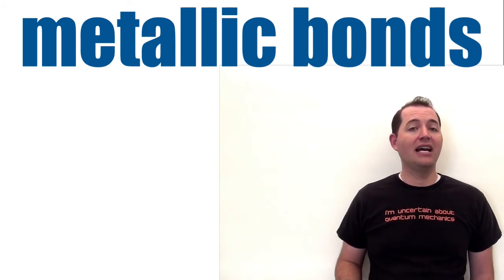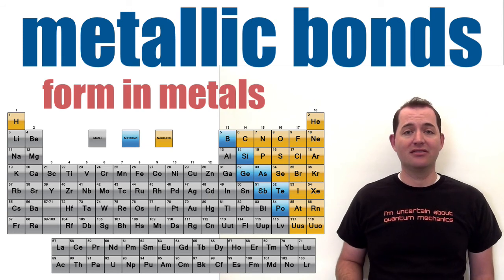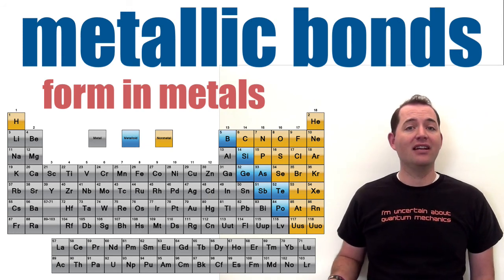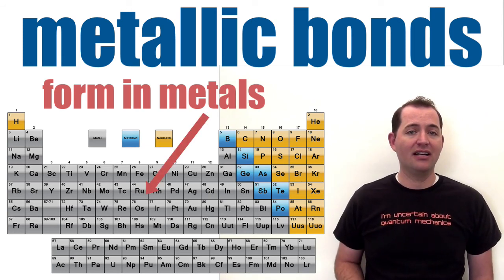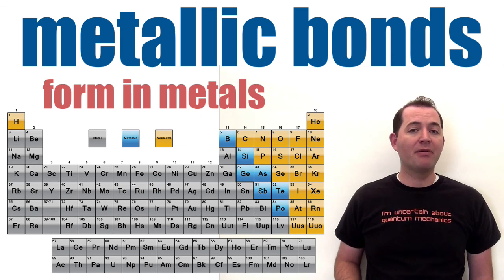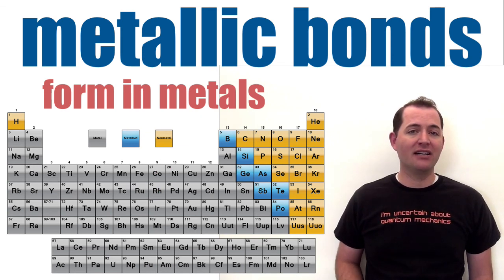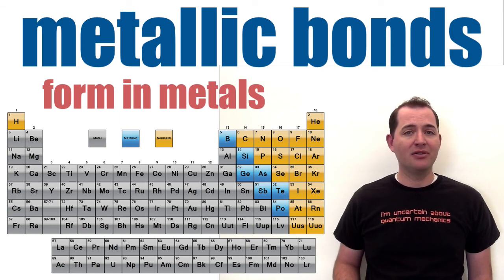Metallic bonds form between metals, which can be found in these areas on the periodic table. This type of bond gives metals many of their characteristics, such as being ductile, malleable, and conductive.